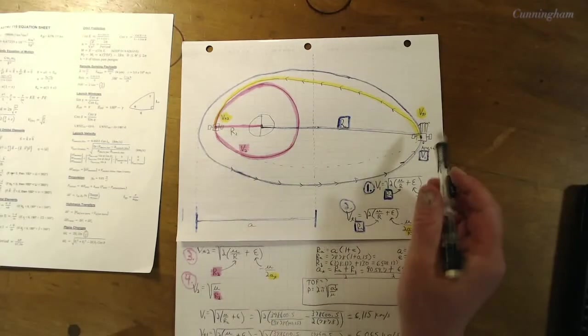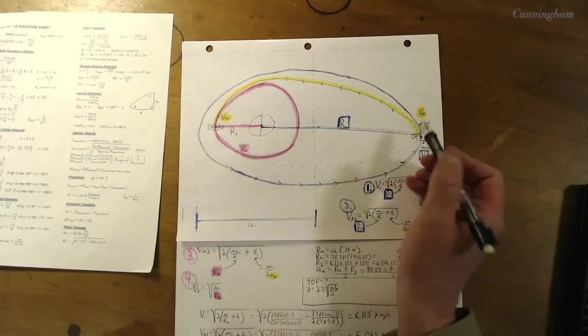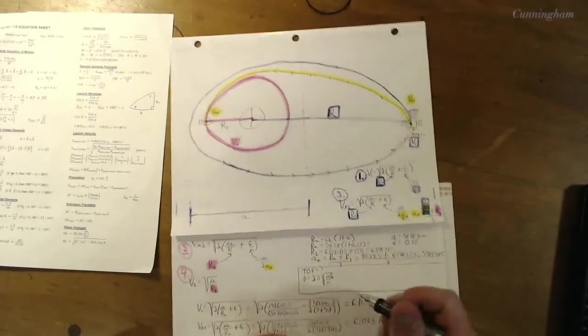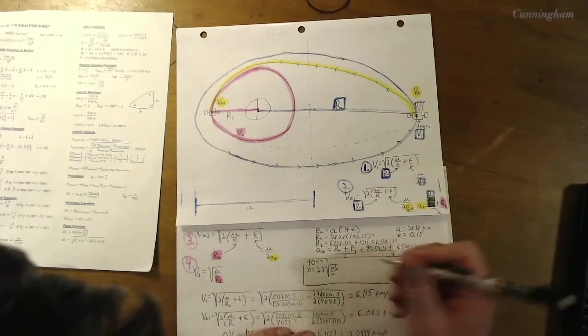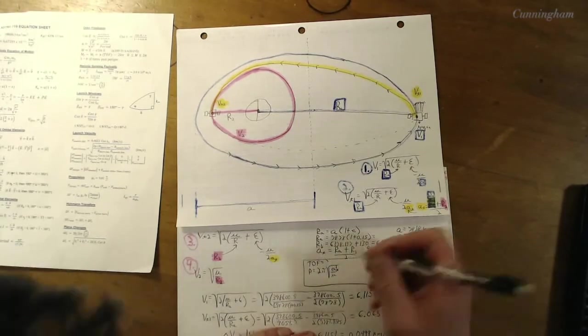So look at this. First of all, just kind of, I have all the orbits that we drew, you know, mission orbit, transfer orbit, and final orbit. If you remember my picture, it was so exaggerated. Look how close to circular these things really are.